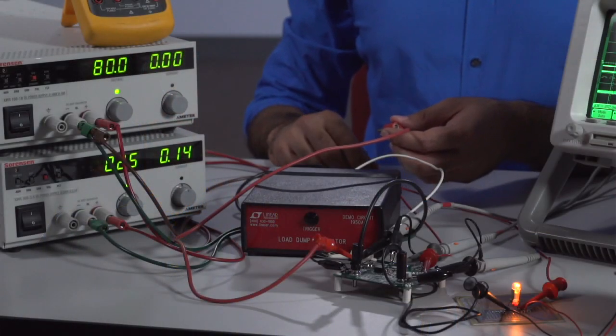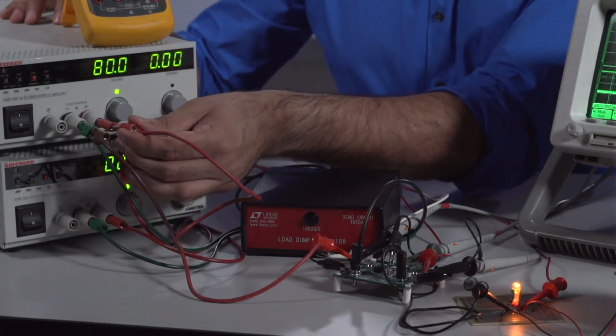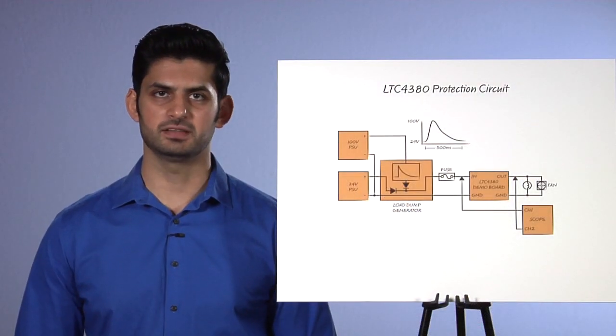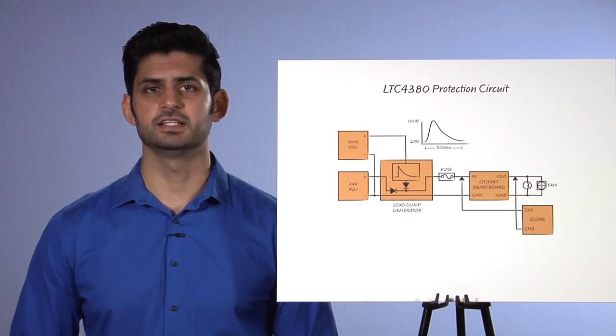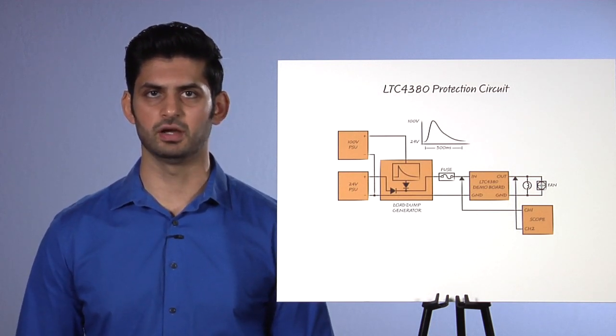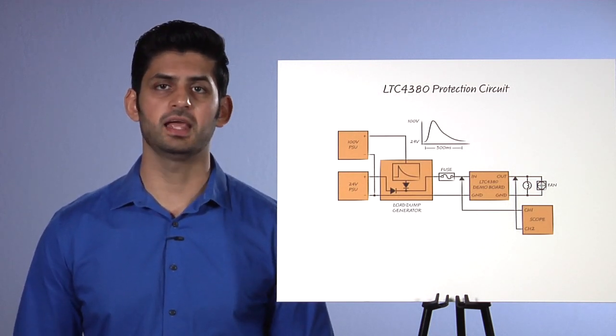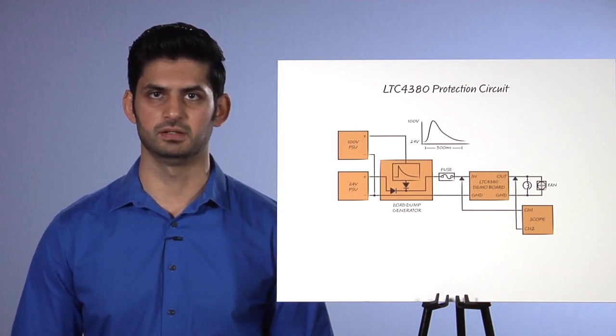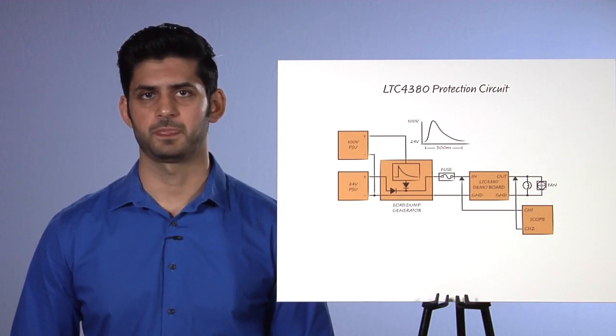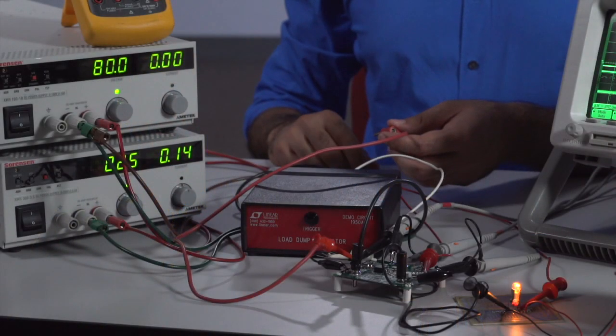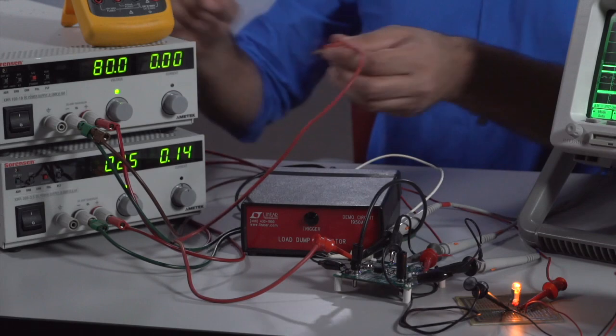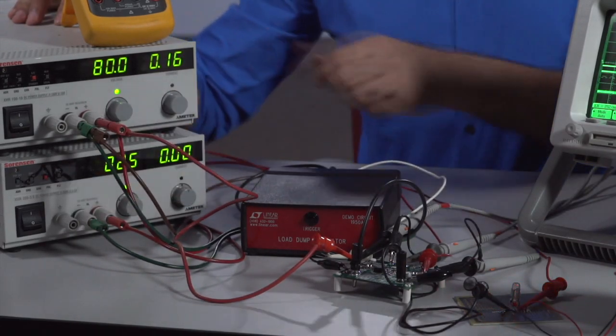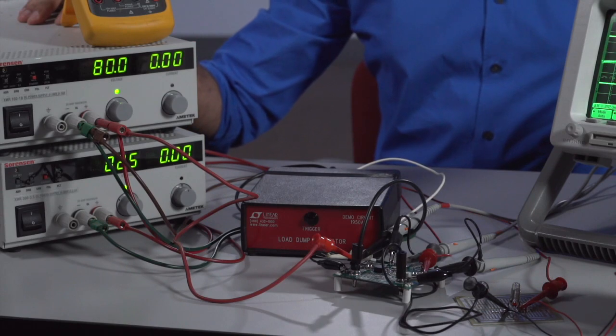The LTC4380 also protects the downstream circuitry against DC overvoltage conditions. The amount of time that this condition can be tolerated is dependent on the safe operating area of the MOSFET, as well as the power ratings of the resistor and zener on the VCC pin, and so is not unlimited. In this case, the LTC4380 protected itself as well as the downstream circuitry by shutting off, as indicated by the light bulb turning off.